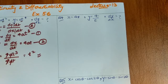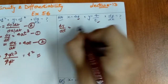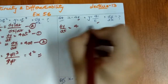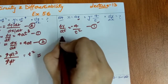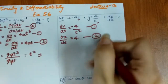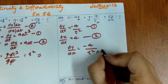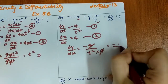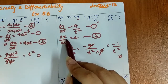Question 4: x = 4t, y = 4/t, find dy/dx. The mutual parameter is t. dy/dt: 4 is constant, derivative of 1/t is −1/t², so dy/dt = −4/t². dx/dt: derivative of 4t is 4. So dy/dx = (−4/t²) / 4. The 4s cancel, giving dy/dx = −1/t².